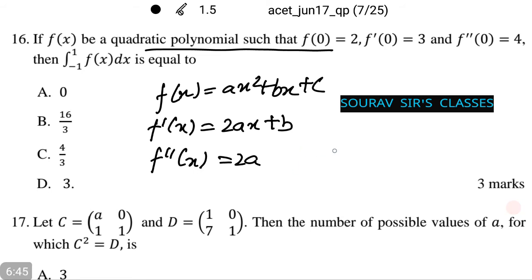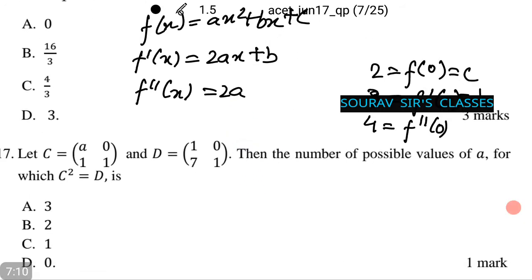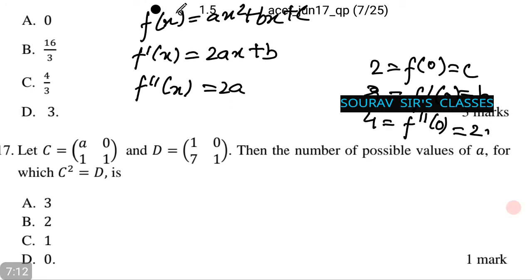As per given conditions, 2 equals f(0) which is equal to c, and 3 equals f'(0) which we assume as b, and 4 equals f''(0) which we assume as 2a.